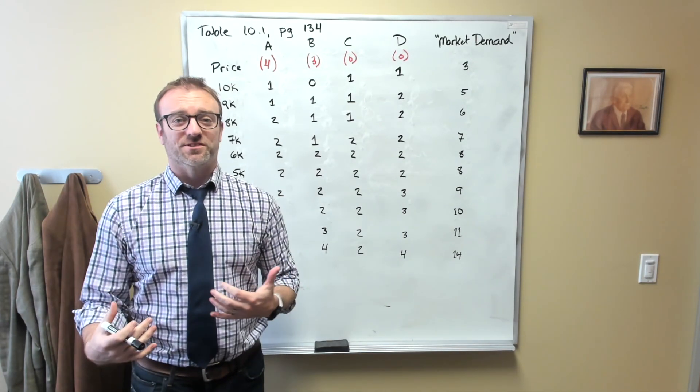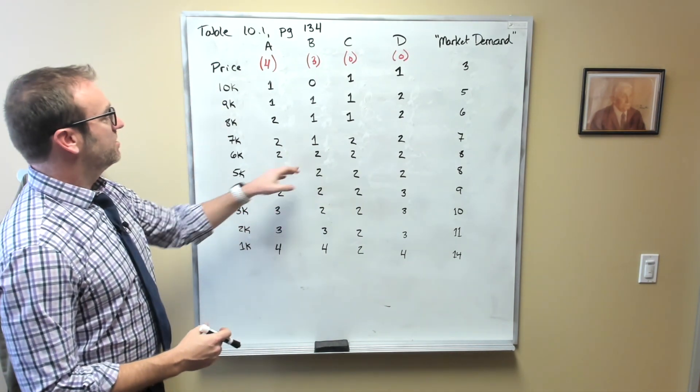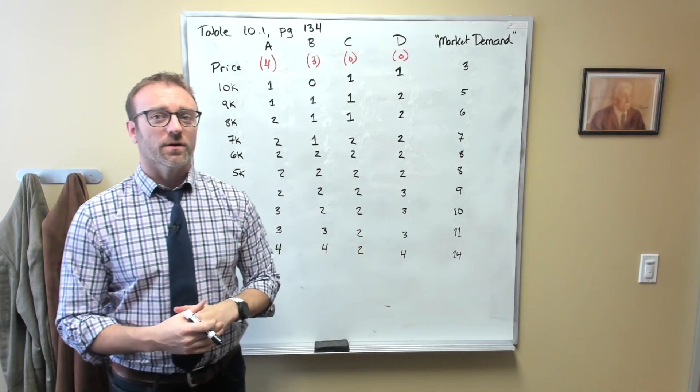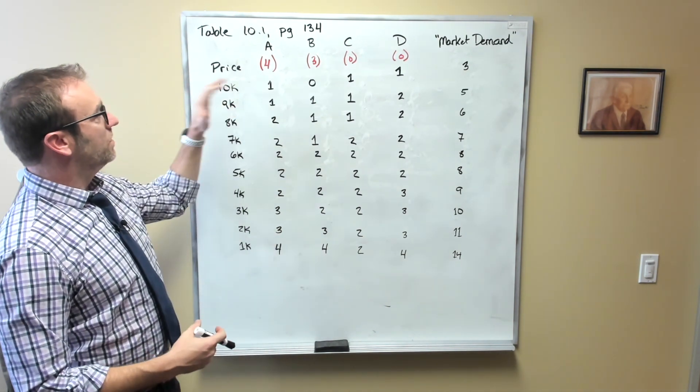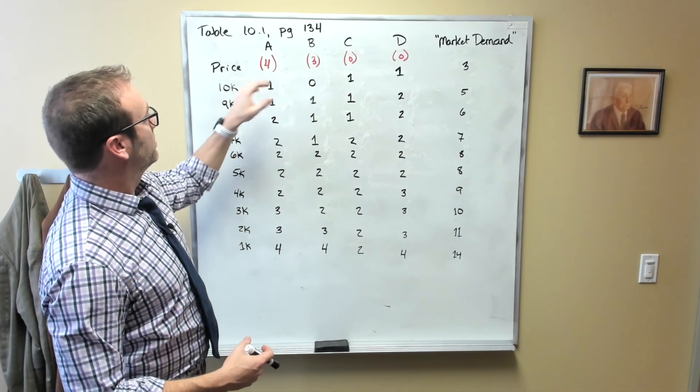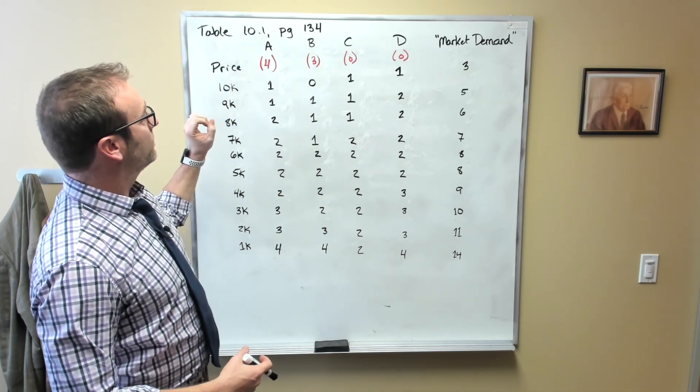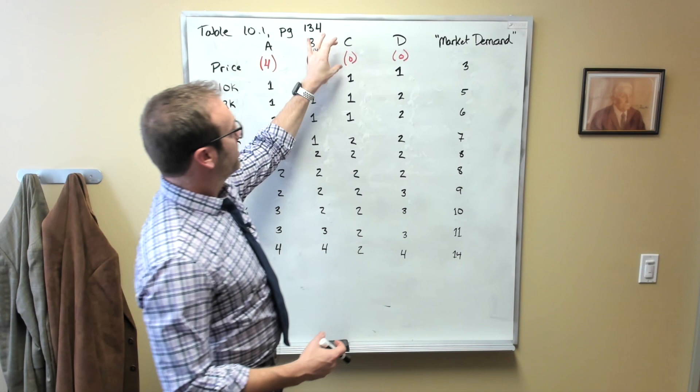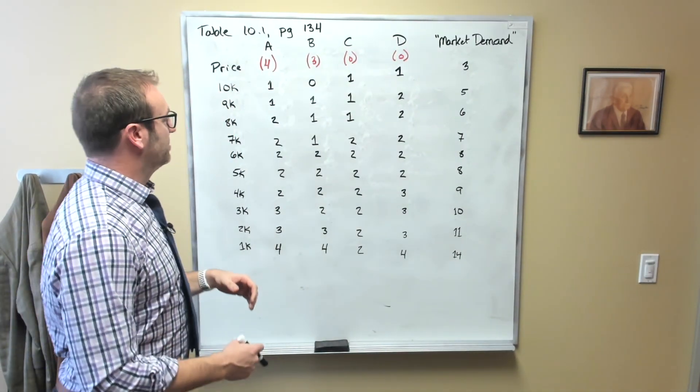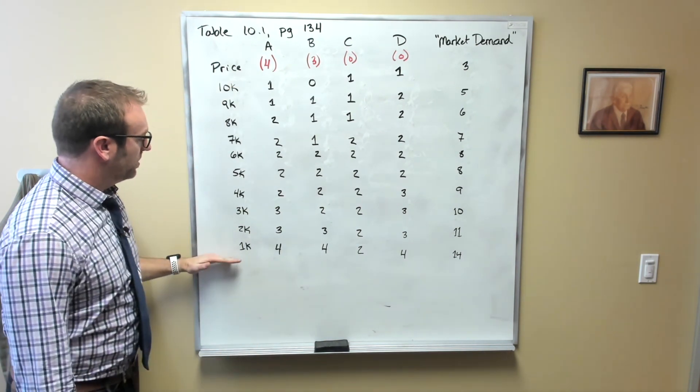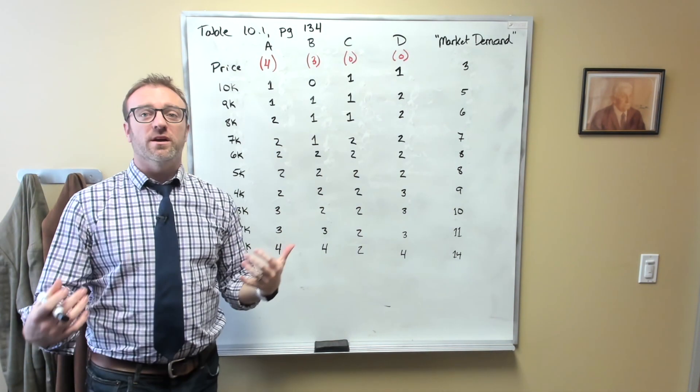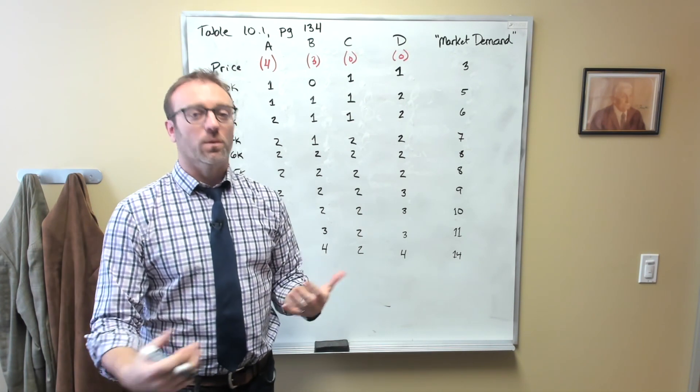Okay, so let's do an example of how this works in the real world. So what I've done here is I've just reproduced table 10.1, which comes from page 134 of our book, and what we can see here are the number of cars that each person A, B, C, and D has. So that's the red number. So here, person A currently owns four cars, person B owns three cars, C owns zero, and D owns zero. And then what we can also see is at different prices, and these are all in thousands of dollars, how many cars this person would actually wish to purchase or would wish to own.